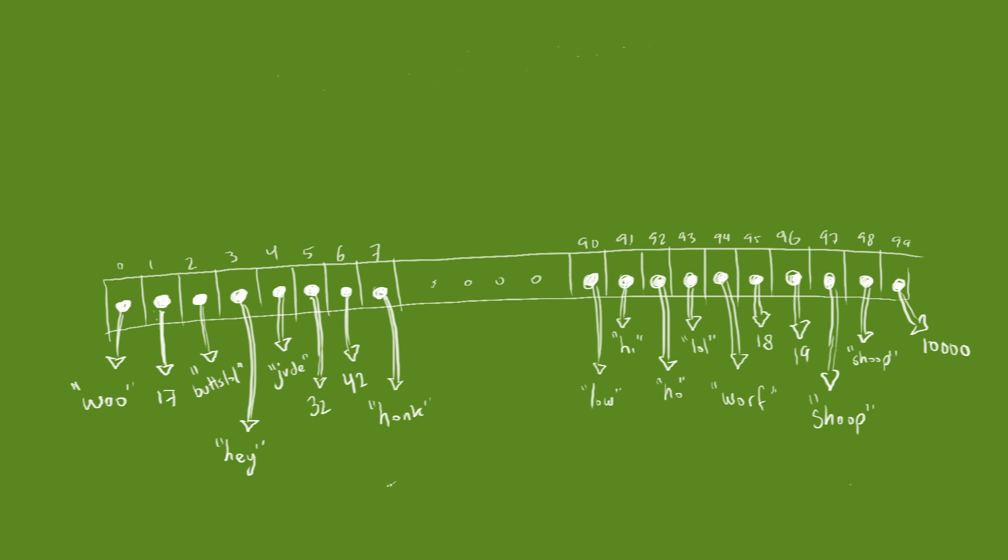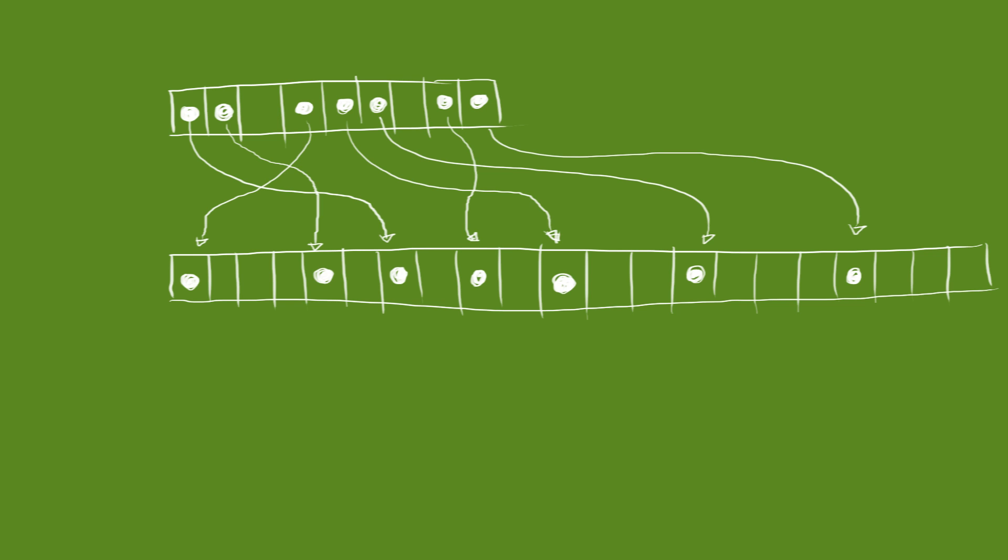What happens when the hash table fills up? Well, the performance starts to degrade, as collisions go from rare occurrences to the most common case. Many hash tables faced with this situation recreate the table with a new bigger array, and rehash every item in the original table to a new location in the new array.